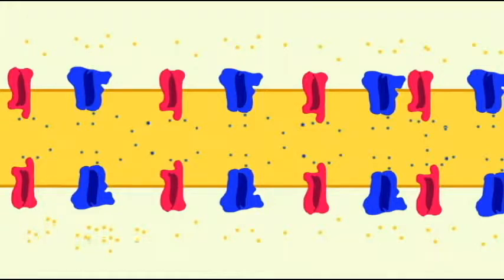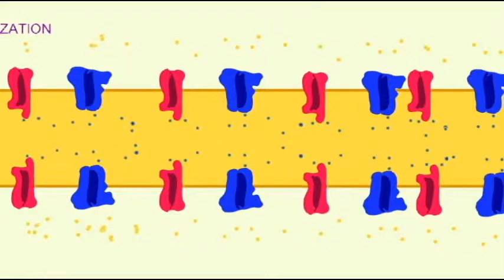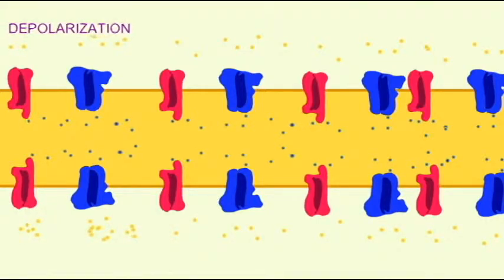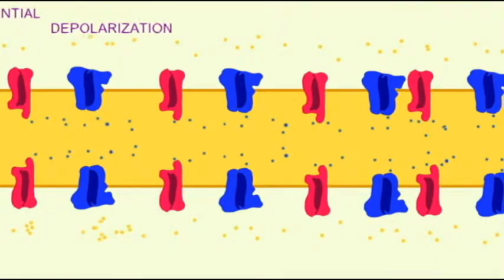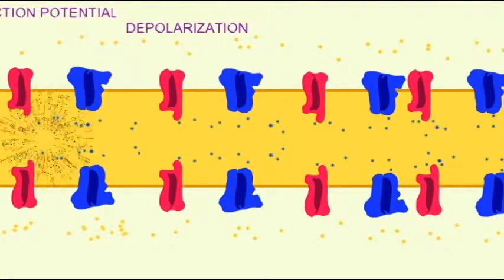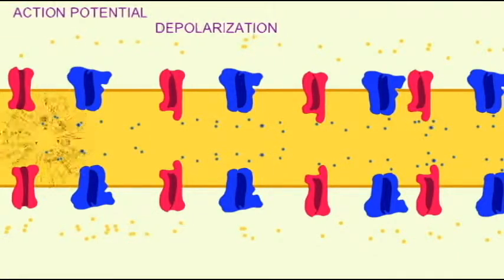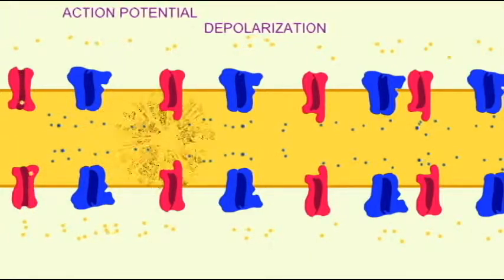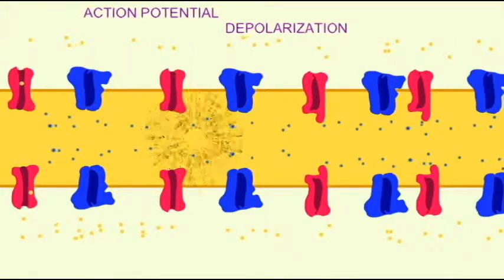As the voltage-regulated sodium gates in one section of an axon open because the threshold voltage is reached, sodium enters that part of the axon. This sodium then moves outward and depolarizes the next region of the axon. This region then crosses the threshold voltage, which causes its voltage-regulated sodium gates to open.